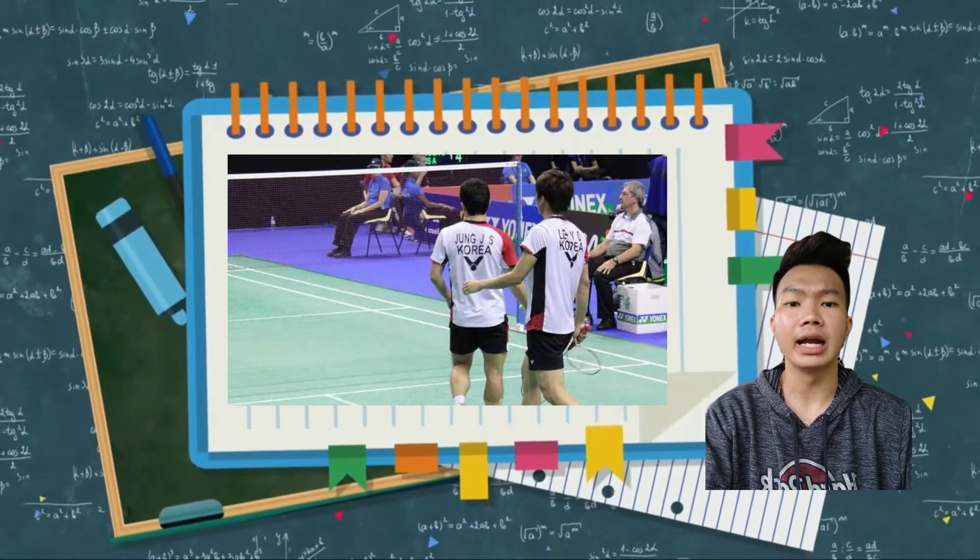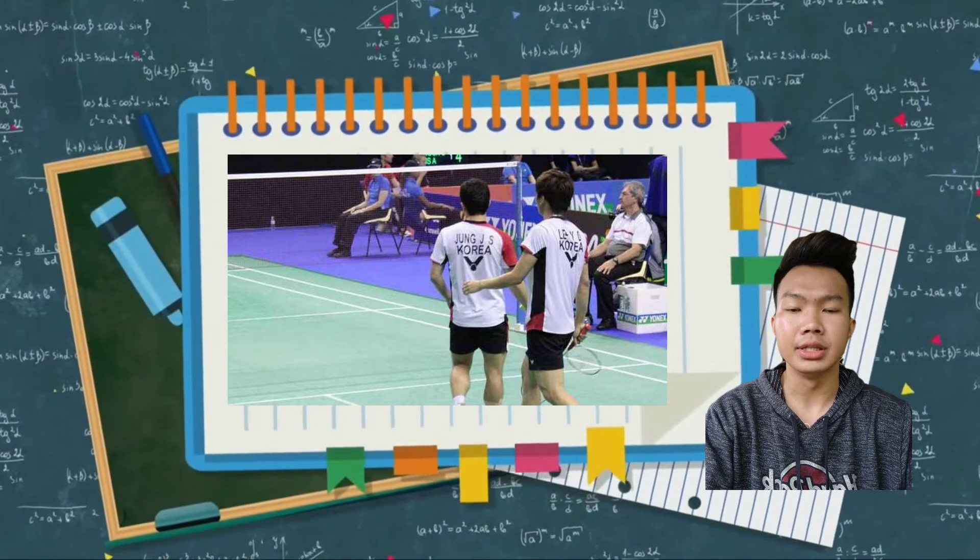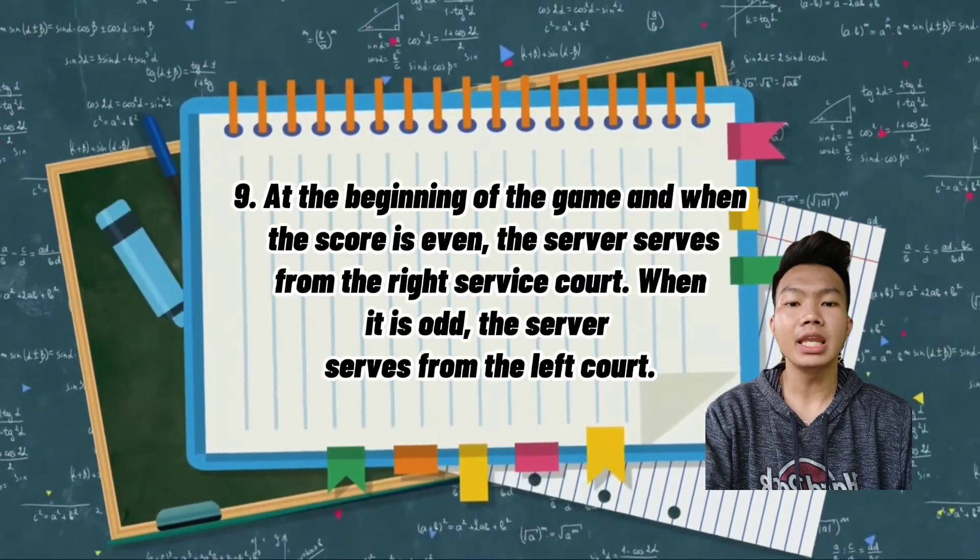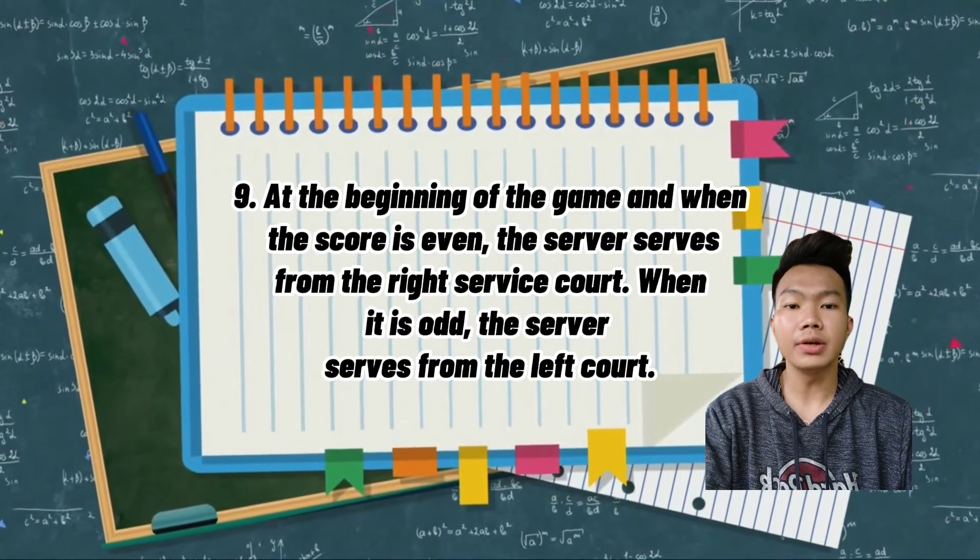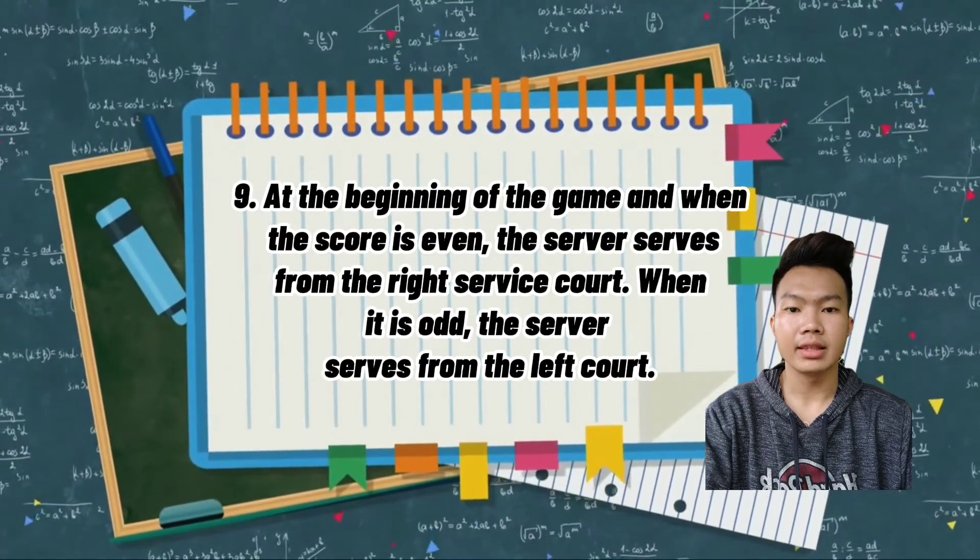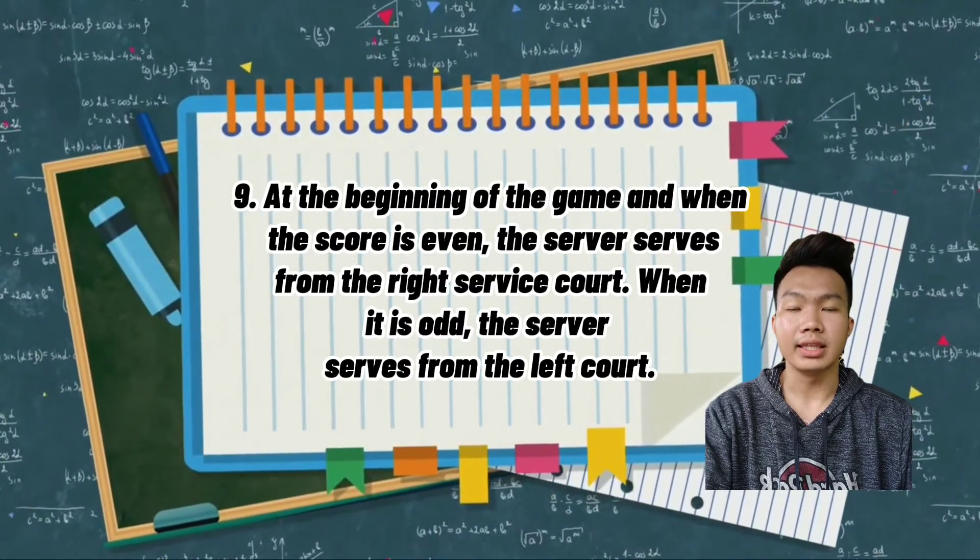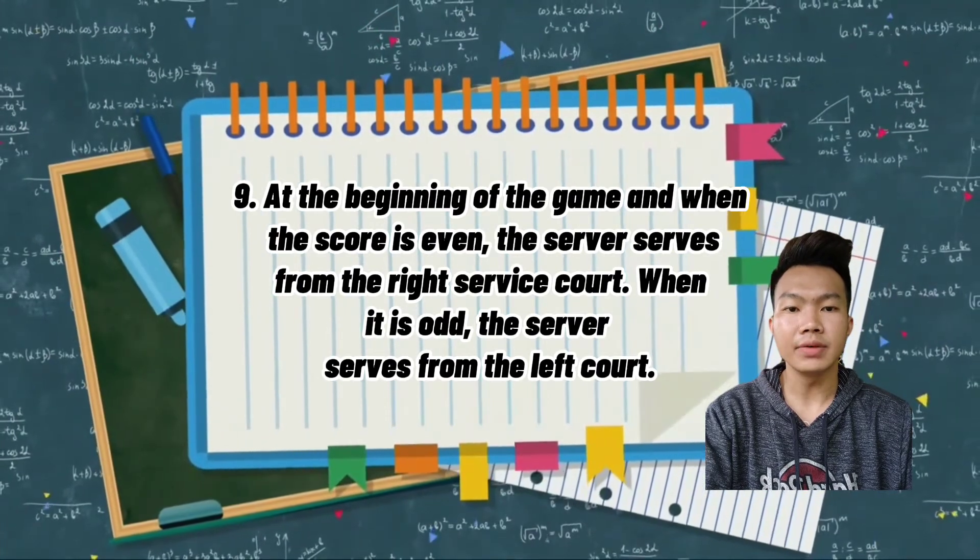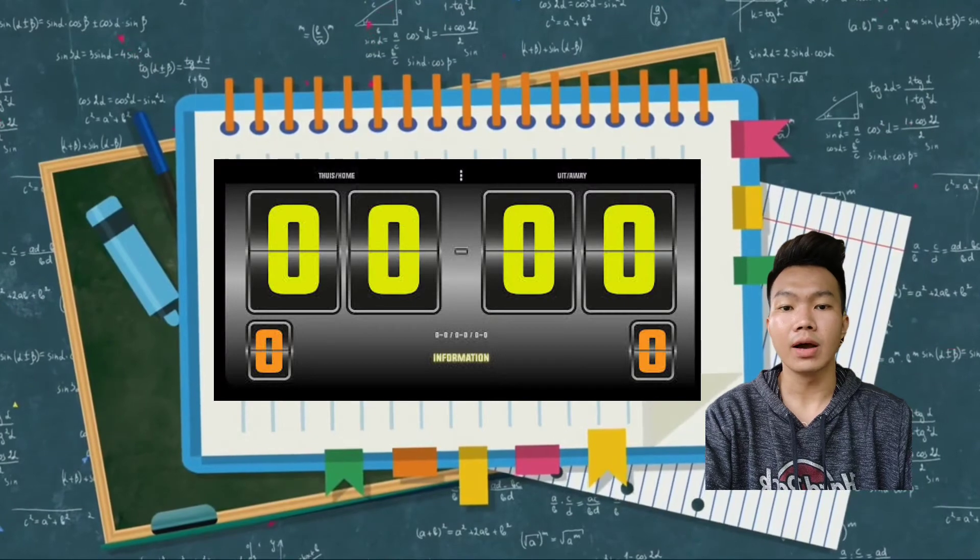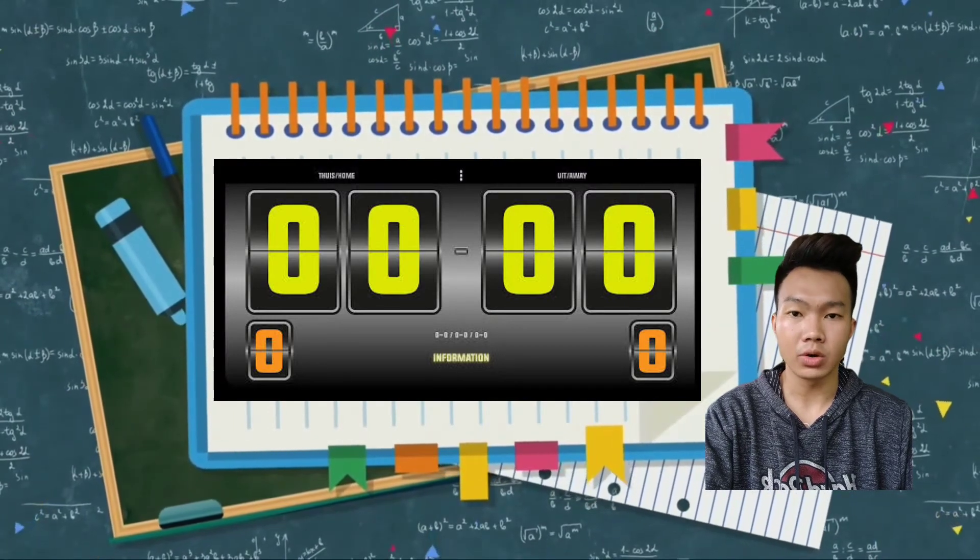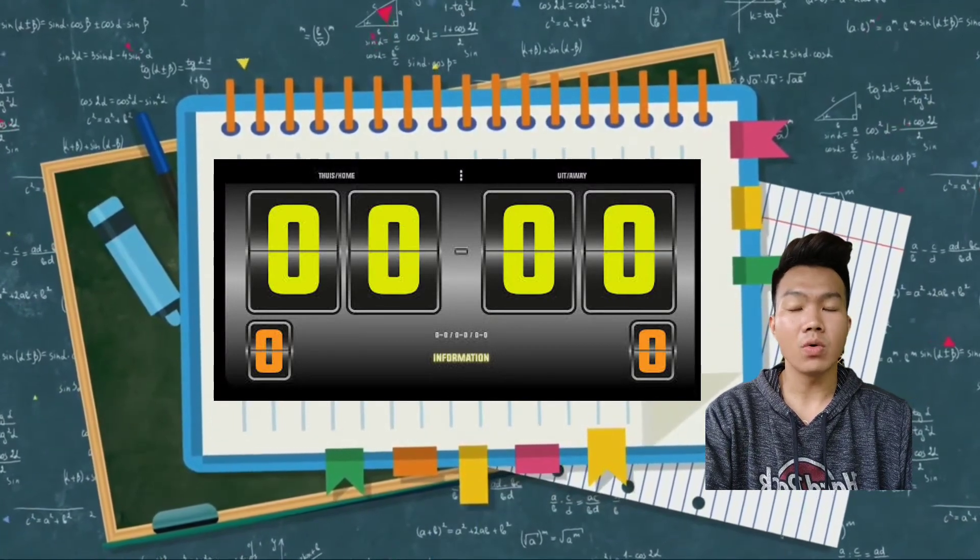Number nine, at the beginning of the game and when the score is even, the server serves from the right service court. When it is odd, the server serves from the left court. At sa simula ng laro, alam naman natin na wala pang score, meaning zero all.